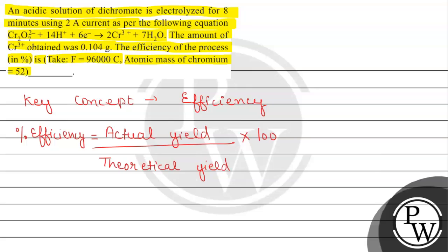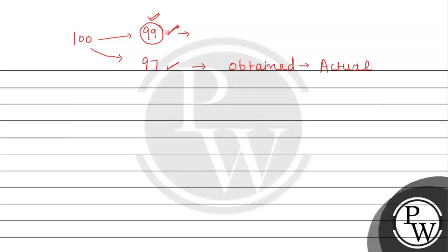According to the given question, it is mentioned that the amount of chromium 3+ obtained was 0.104 gram, which means actual yield is given. For finding this, we need to find out theoretical yield first, which means we need to find mass. Mass equals number of moles multiplied by atomic mass.